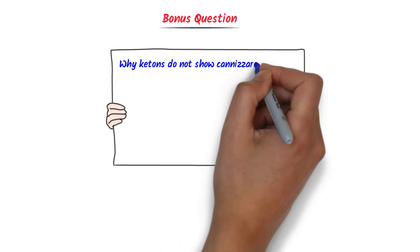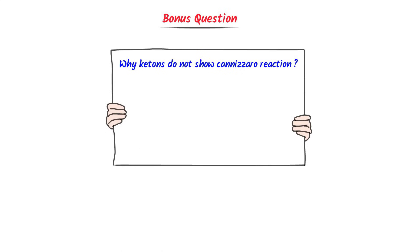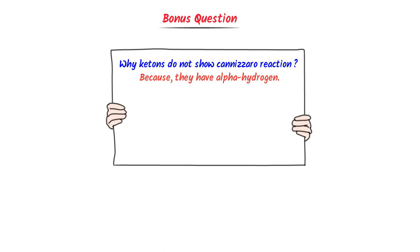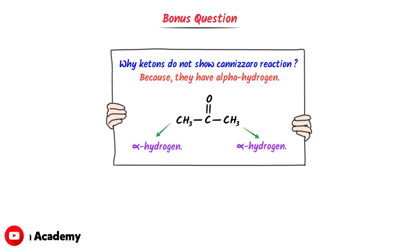Here is one bonus question: why do ketones not show Cannizzaro reaction? It is because they have alpha hydrogen, due to which they do not show Cannizzaro reaction. For example, consider this ketone — we can see that it has alpha hydrogens on both sides. Due to these alpha hydrogens, ketones do not undergo Cannizzaro reaction.